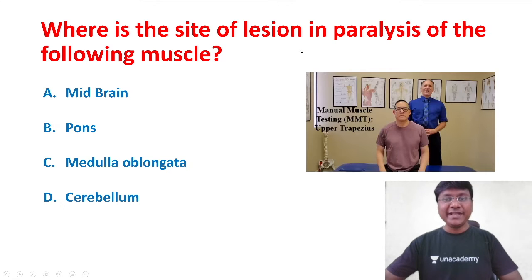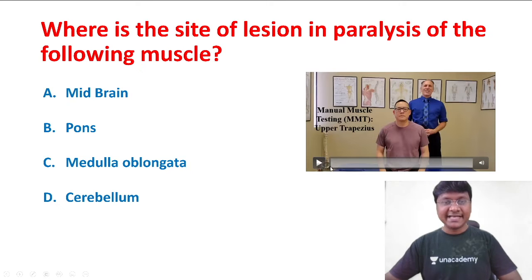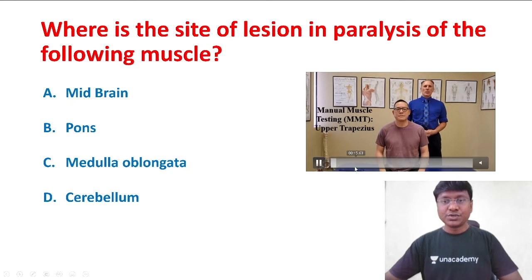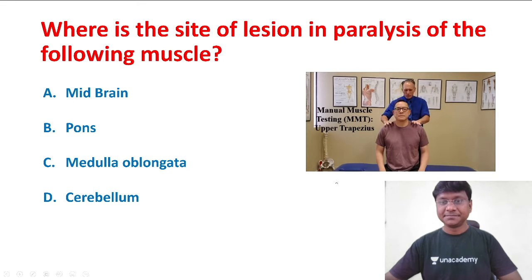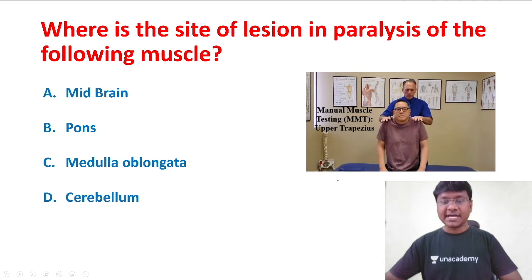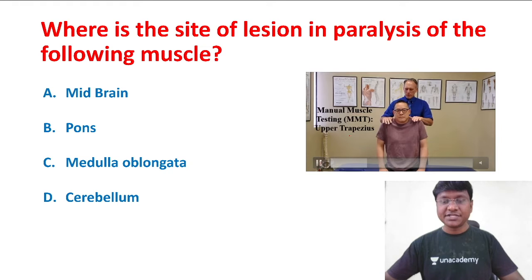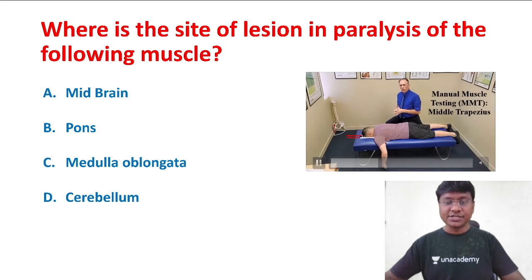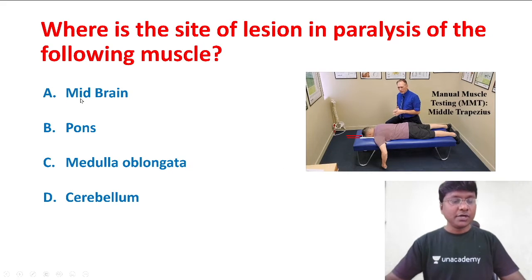The question is: where is the site of lesion in the paralysis of the following muscle? I will show you the examination of the respective muscle. Observe which muscle is being examined in this individual. You can see that the individual is asked to shrug the shoulders. The muscle required for shrugging the shoulders is the trapezius. The options are: midbrain, pons, medulla oblongata, or cerebellum.